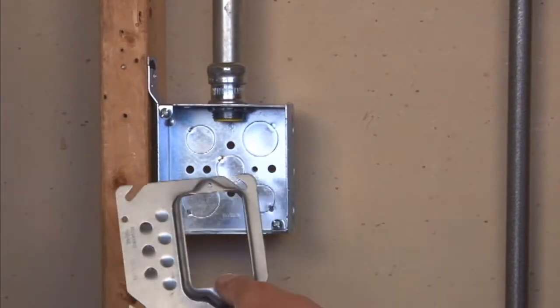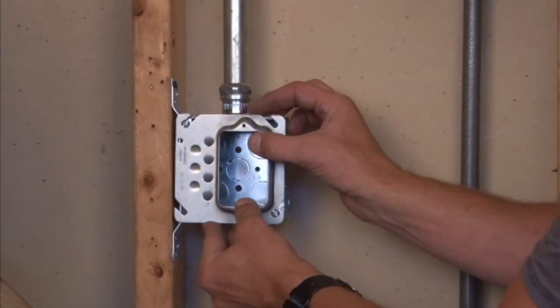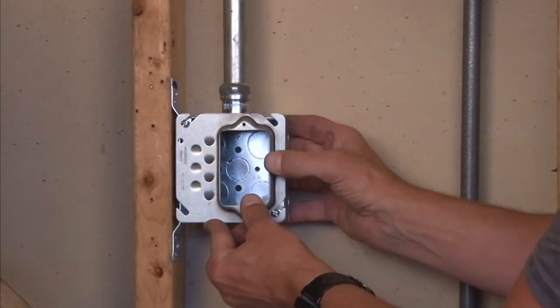The way this particular unit works is you align the easy mount slots with the box ears and slide it into place on a 4 inch square box.